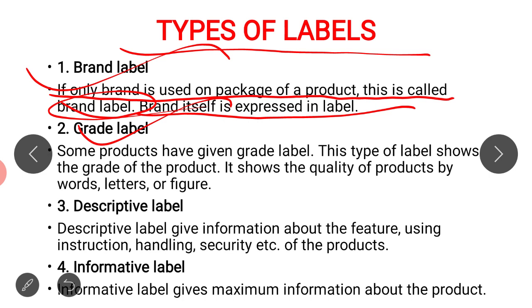Another type of label is the grade label. Some products are given a grade label. This type of label shows the grade of the product — meaning it shows the quality of the product using words, letters, or figures. A grade label tells what standard or grade a particular product has — whether it is of good, better, or best quality. You can also use a numbering system like one, two, three, or letters like A, B, C to denote standard grades.